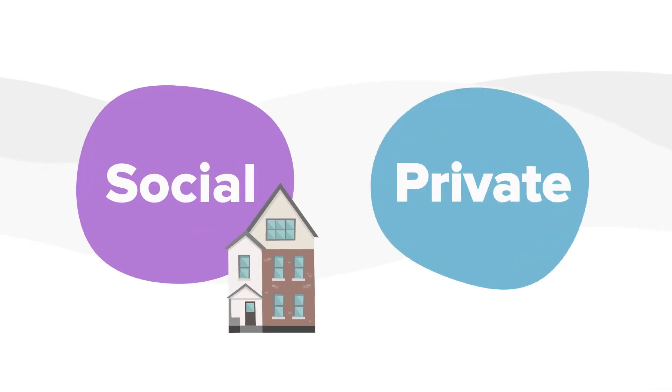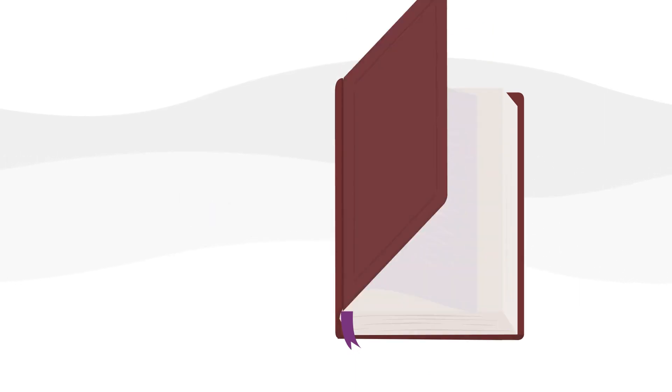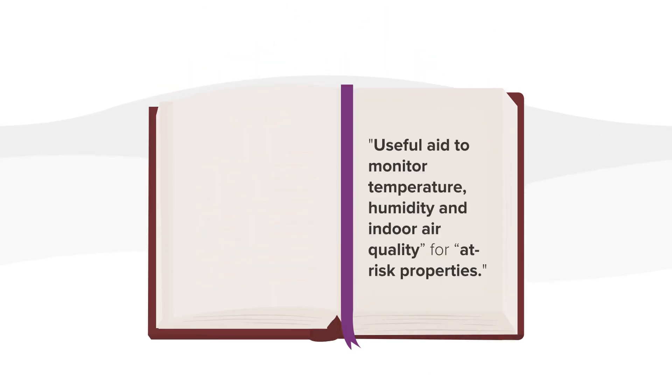This type of monitoring system is ideal for social and private household landlords, with government guidance recommending the use of smart sensors which can be a useful aid to monitor temperature, humidity, and indoor air quality for at-risk properties.